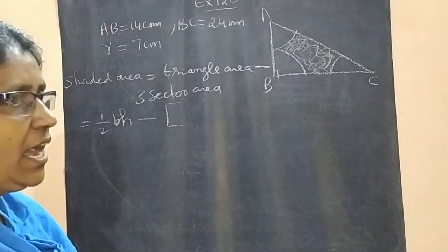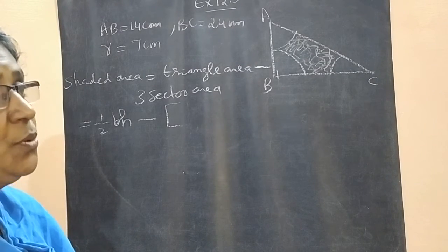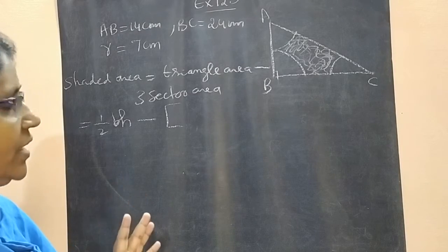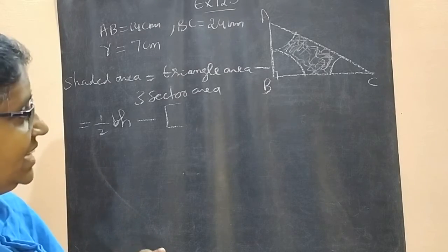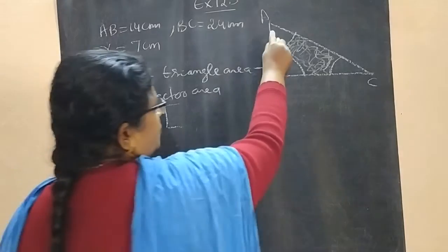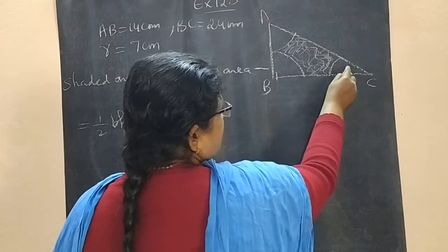What is sector area? It is theta by 360 into pi r square. R is already given 7. But theta, we don't know. What is this angle? What is this? What is this? We don't know.